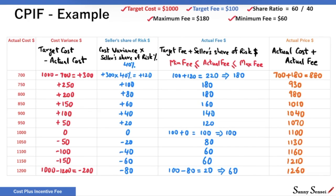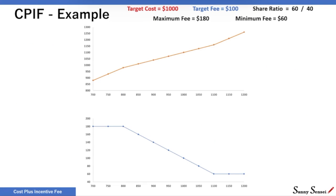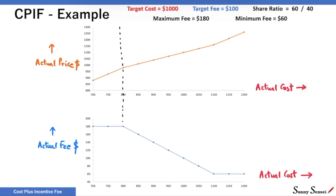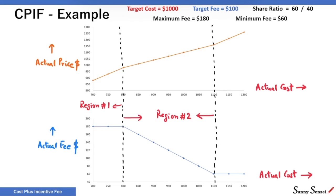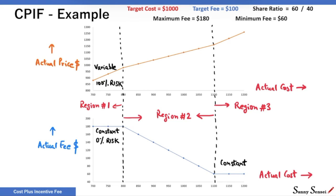We will plot this data to get further insights into CPIF contracts. The top graph shows actual price against actual cost; the bottom one shows actual fee plotted against actual cost. We can clearly see three distinct regions: Region 1 to the left, Region 2 in the center, and Region 3 to the right. In Region 1, the actual fee is not changing with changes in actual cost — it is constant. This means no risk for the seller. Actual price is changing, and for every single dollar increase in actual cost, actual price also increases by a dollar — 100% risk is on the buyer. Region 3 is also similar to Region 1: the actual fee is constant, and the seller bears no risk.